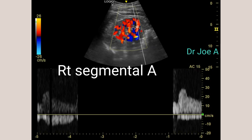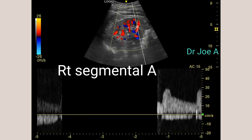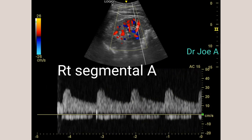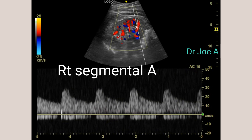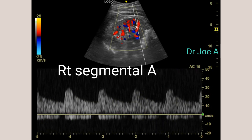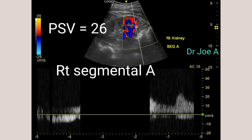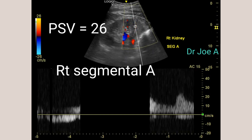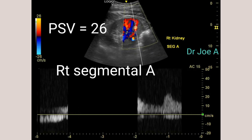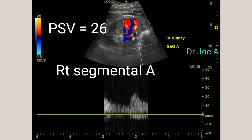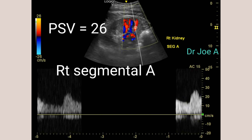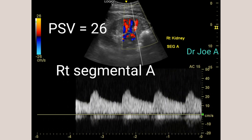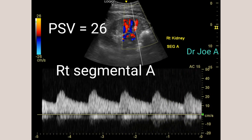The peak systolic velocity in the segmental arteries is slightly lower than that in the renal arteries. The peak systolic velocity in both segmental arteries appears to be in the range of 26 to 30 cm per second, with an RI of around 0.45. These values are totally normal.